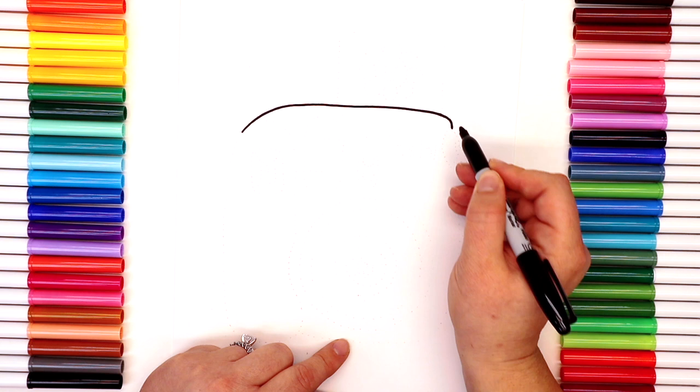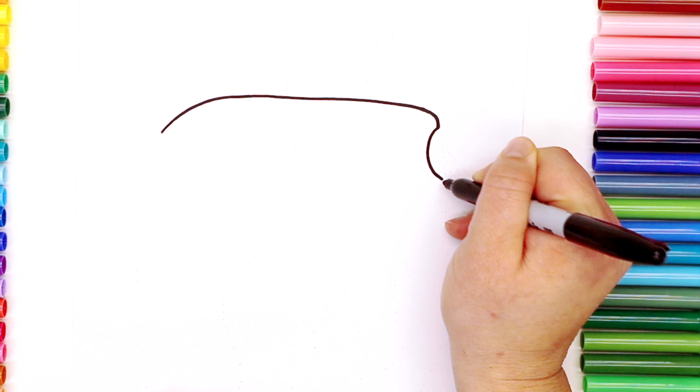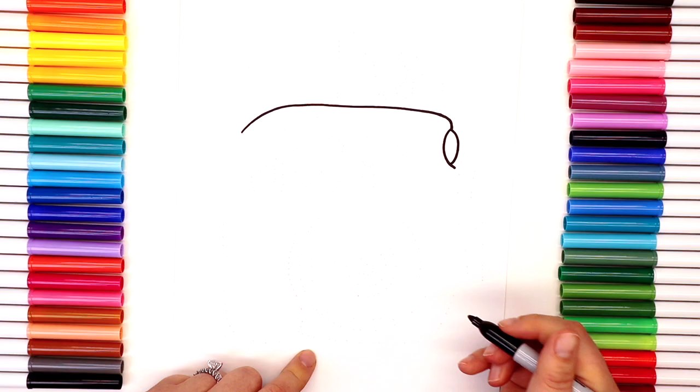The first shape we're going to draw is the top of our camera. As you can see, there's less of a curve and more of a curve. Try and follow along the best you can. Great job. Now we're going to bring down the side of the camera. Got a little fuzzy there. Don't forget to round out our corners—this isn't a perfect square.